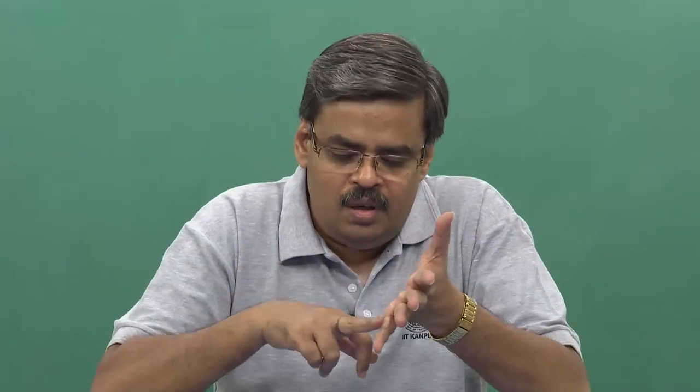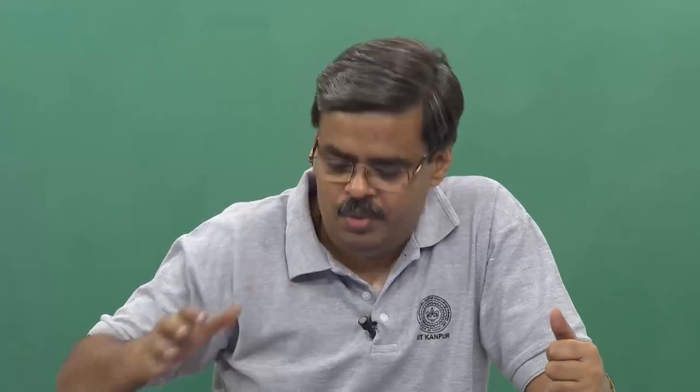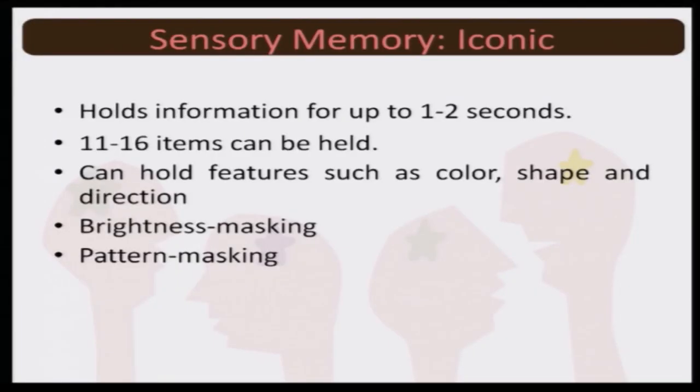Eyes and ears both are capable of storing information for a shorter period of time, allowing you the probability of processing this information at a little later stage. These are the biological foundations of sensory memory — specifically iconic and echoic memory. Iconic memory, which has to do with the eyes, can hold information for up to one to two seconds. We will come to echoic memory and realize that ears are able to store information for a little longer period compared to eyes — we will take up that question when we come to echoic memory.